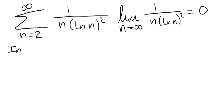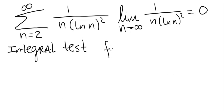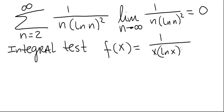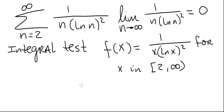So let's try the integral test. The integral test works like this: we're going to need a function that gives us the nth term of our series if we plug in a positive integer n greater than or equal to 2 for x. Clearly such a function has to be f of x equals 1 divided by x times natural log of x squared. We'll look at this function for values of x in the interval 2 to infinity, since our series starts at 2.